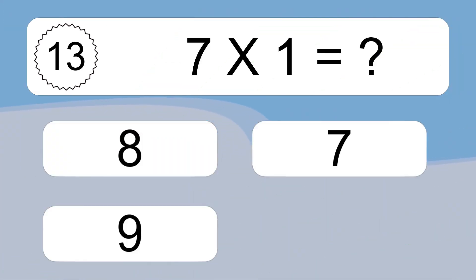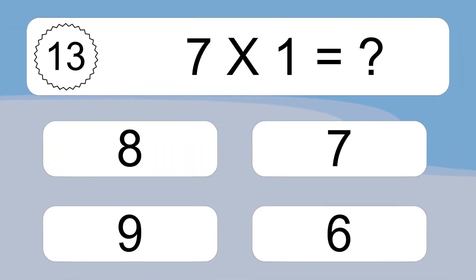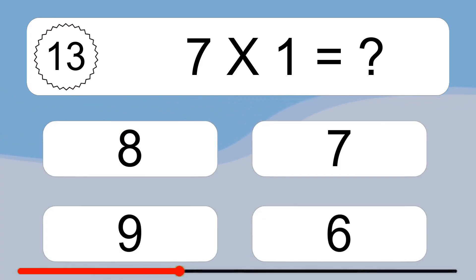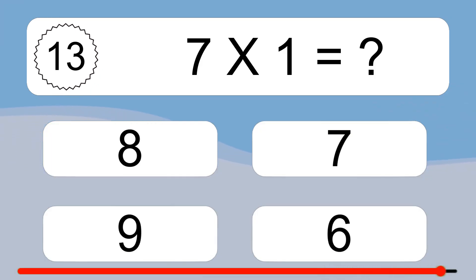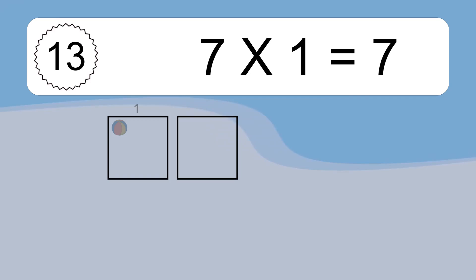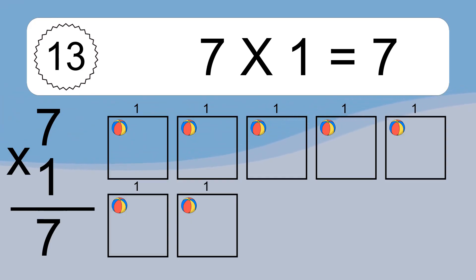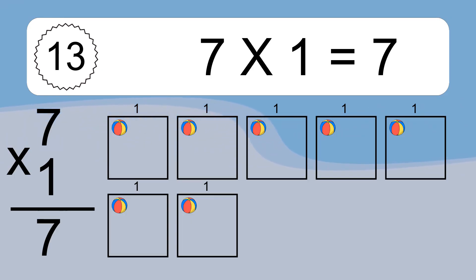7 times 1 equals what? 7 times 1 equals 7. We have 7 boxes, and each box has 1 colorful ball inside. If you count all the balls in all the boxes together, you will have 7 times 1 balls. This equals 7 balls.